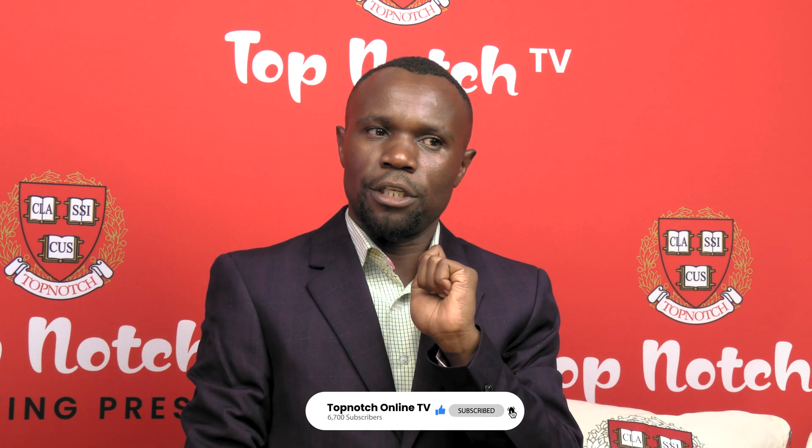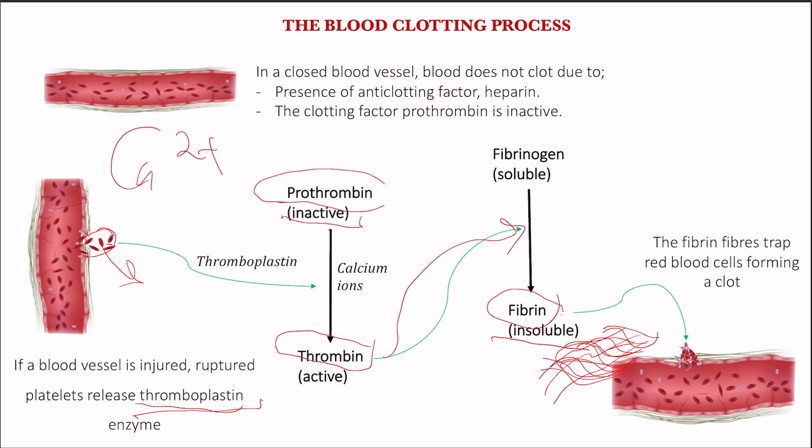To summarize the formation of a clot: platelets rupture and release thromboplastin enzyme, which neutralizes heparin — the anti-clotting factor. The thromboplastin enzyme also activates inactive prothrombin to its active form, thrombin — a process that requires calcium ions. The active thrombin then converts soluble fibrinogen to its insoluble form, fibrin. The fibrin forms a meshwork of fibers which trap the red blood cells to form a solid clot. When the clot dries, it forms a dry scab.